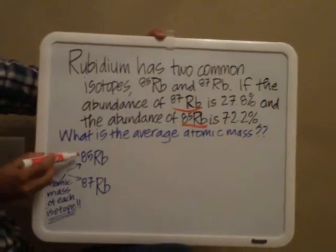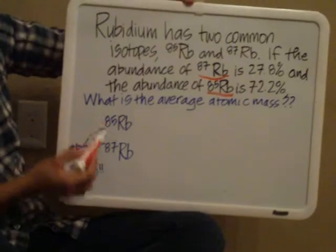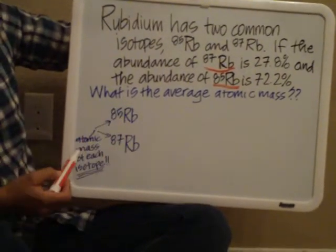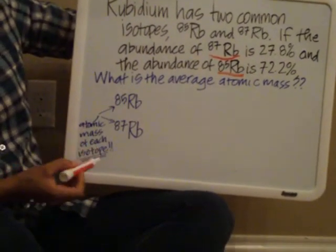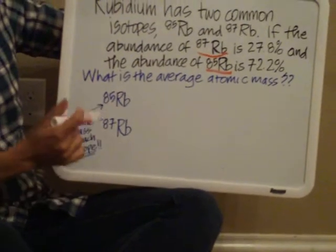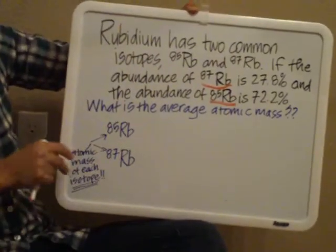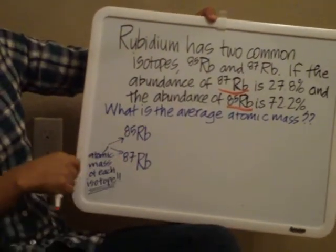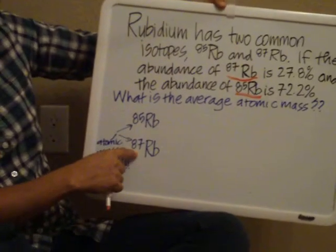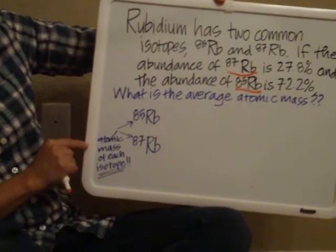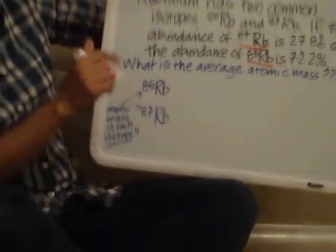For you guys to know, remember that number in the top left-hand corner of the symbol represents the atomic mass for each of those isotopes. So in this question, rubidium has two isotopes, rubidium-85 and 87. The 85 and the 87 represent the atomic mass for each of those isotopes.